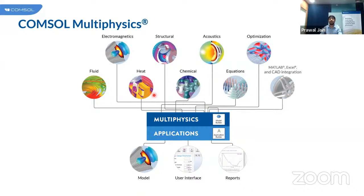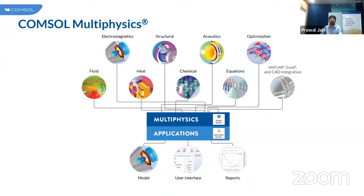CommSol is a multiphysics software platform where you can simulate real-world designs and processes in a virtual environment. The uniqueness of CommSol Multiphysics is that you can account for various physics in your actual problem, and all those physics can be coupled together to understand their bi-directional effects. To realize the full benefits of simulations — whether shorter product development times, greater insights, more innovative designs, or an ability to reject flawed concepts early — these models need to account for all of the physics that affect the outputs you are trying to predict.